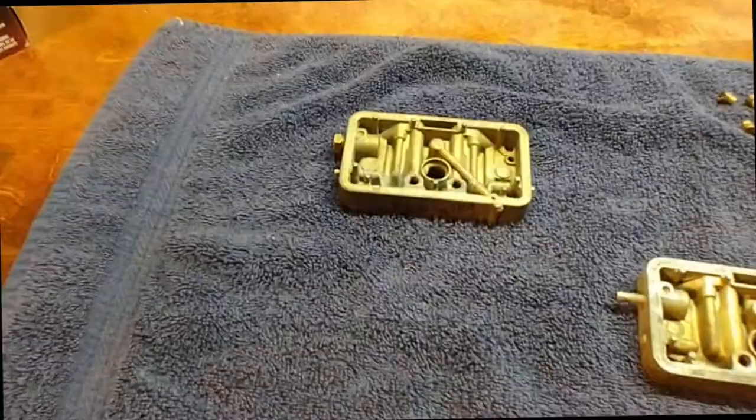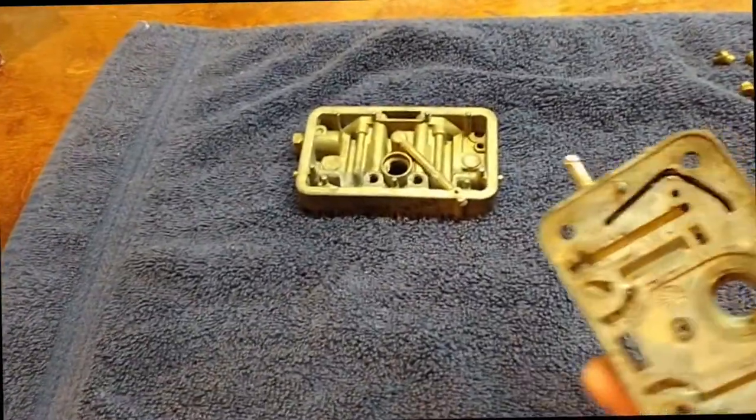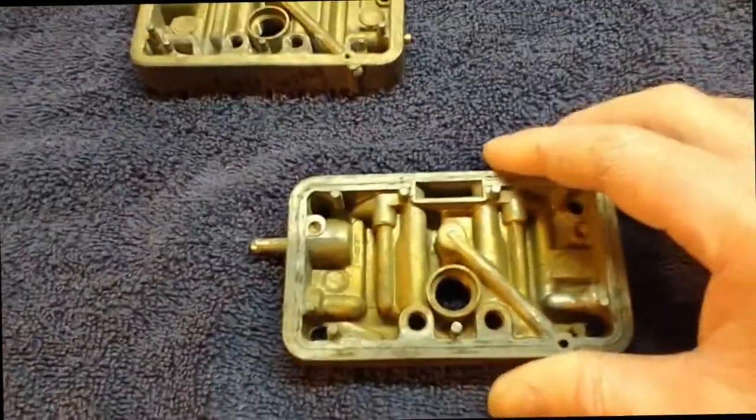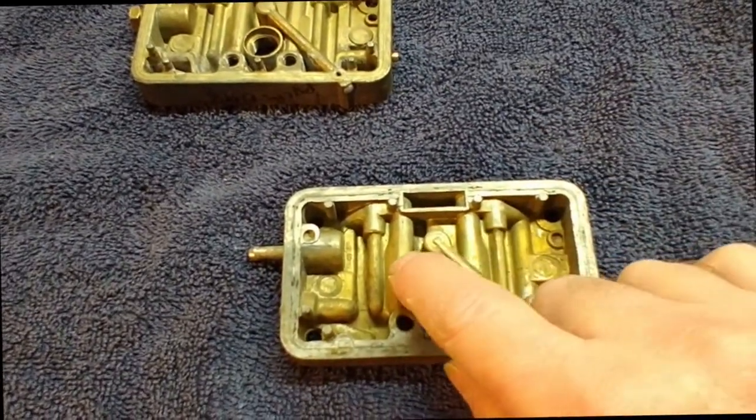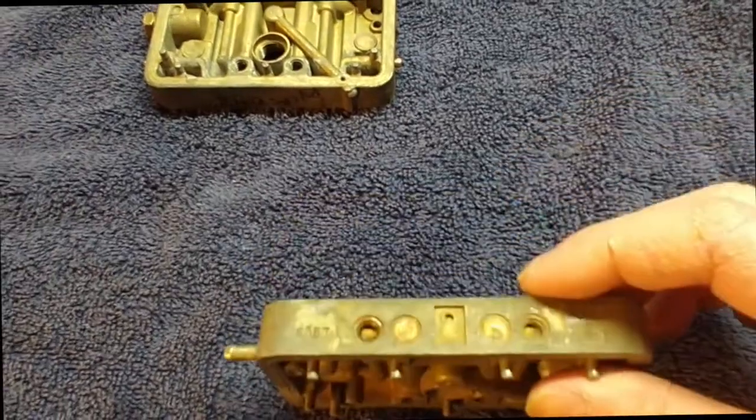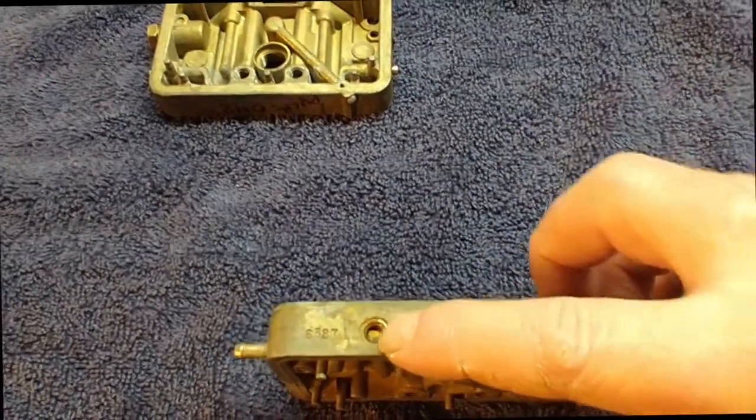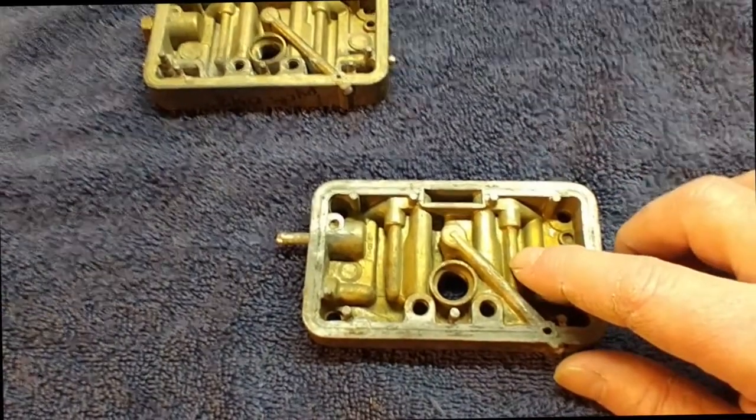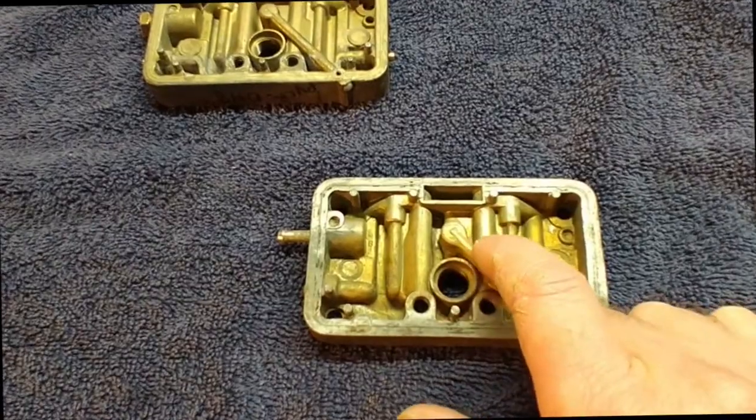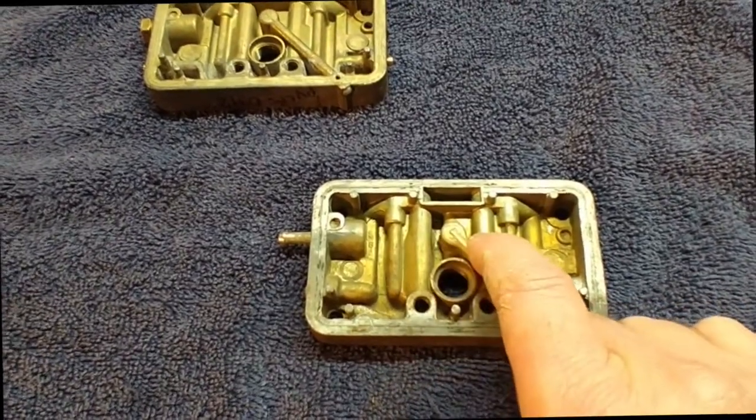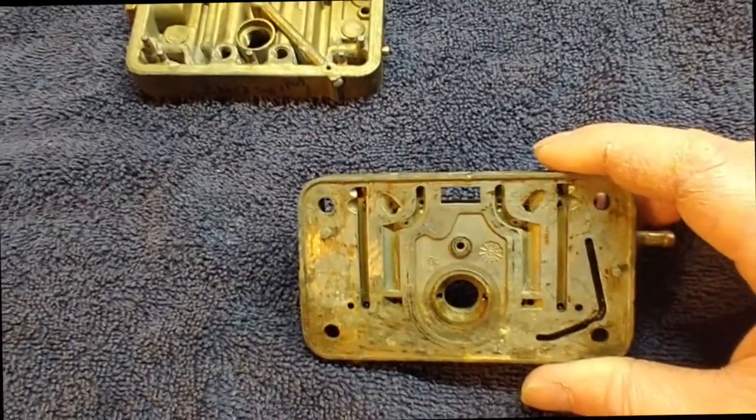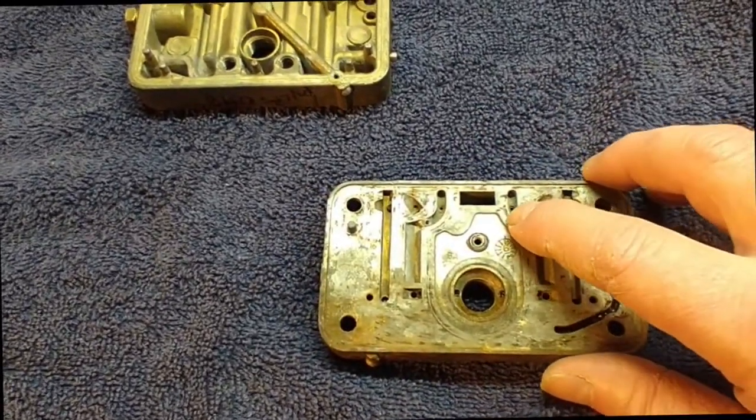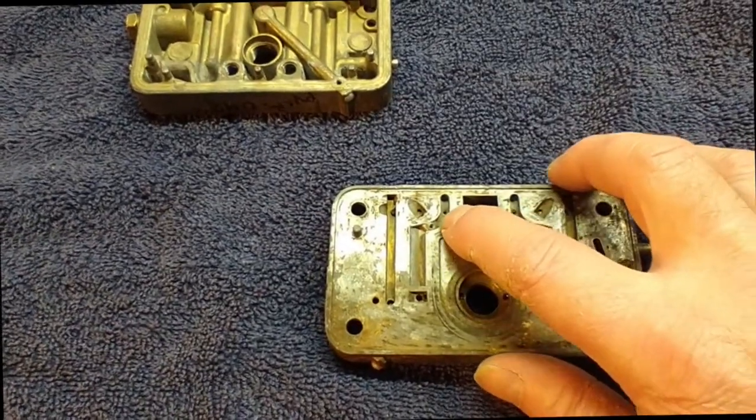So here's a Holley example. Do Holleys have well tubes? Well, yes, they do. And you can see right there, you can see these drillings in the casting that have been plugged. And these outer ones are the idle tubes, idle well tubes, and the inner ones are the main jet well tubes. And if we flip it over, you can see that we have air bleeds. There's an air bleed there, there's an air bleed here.